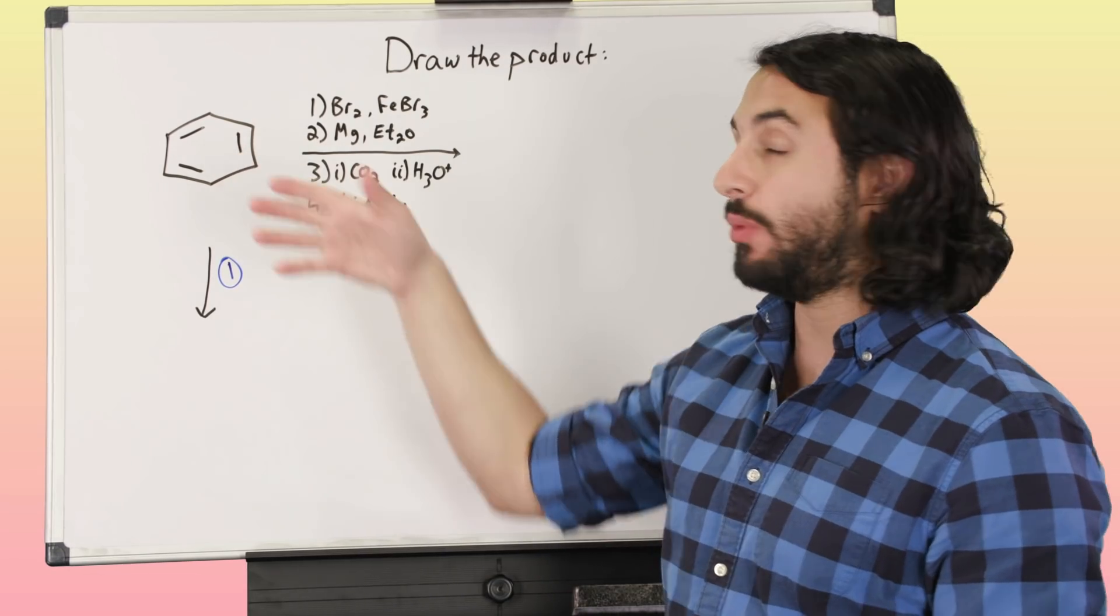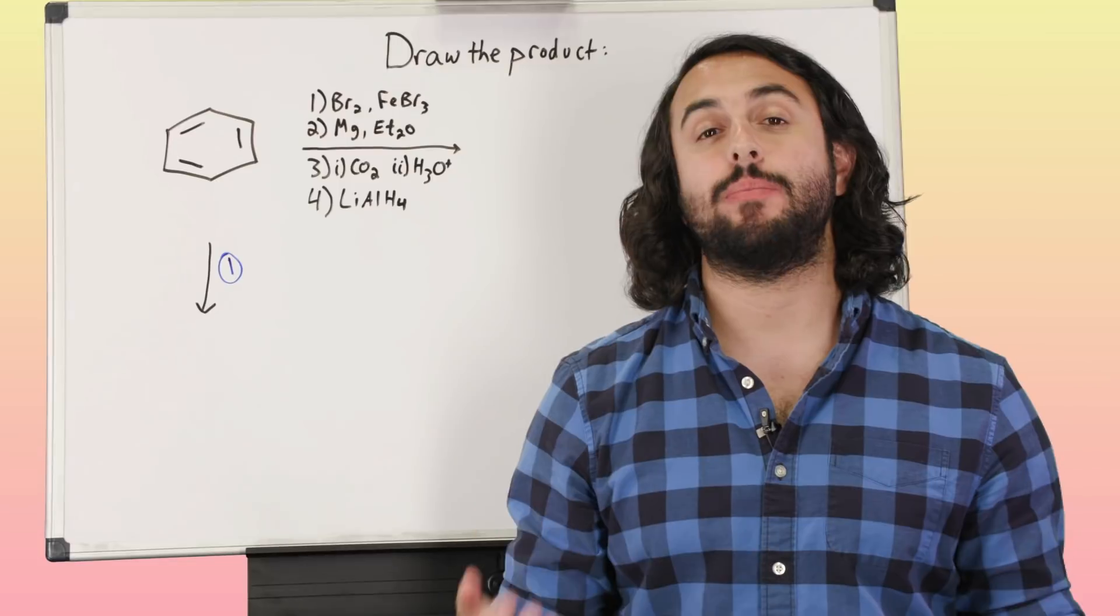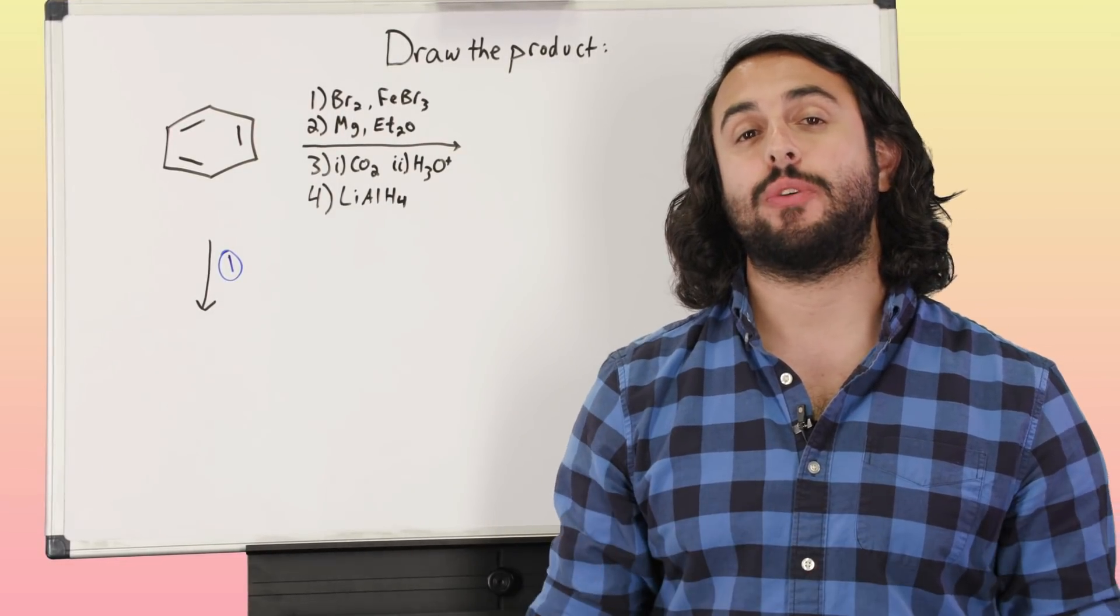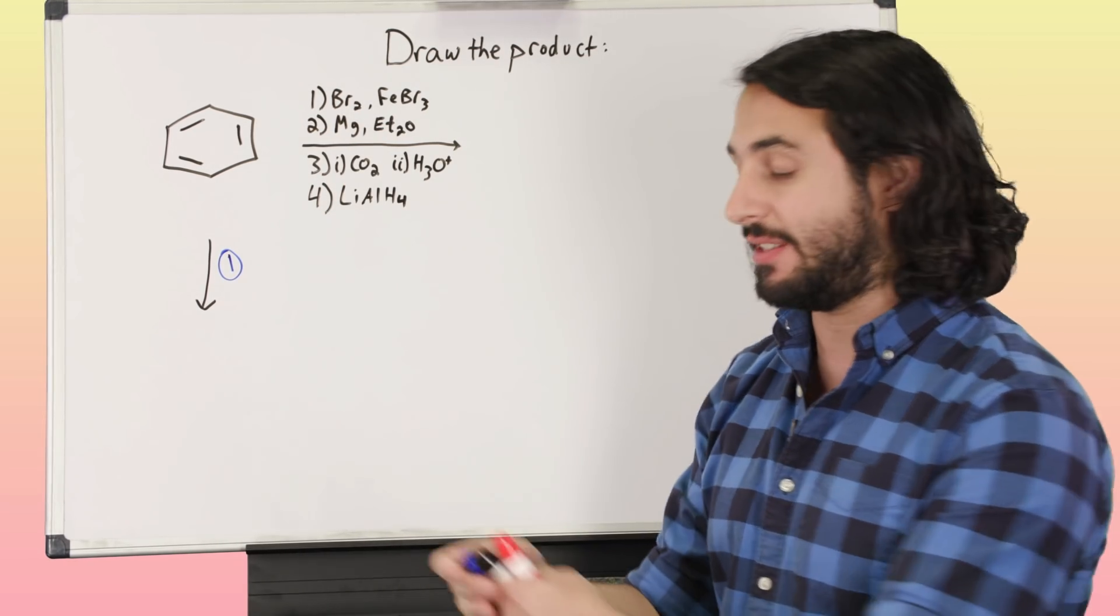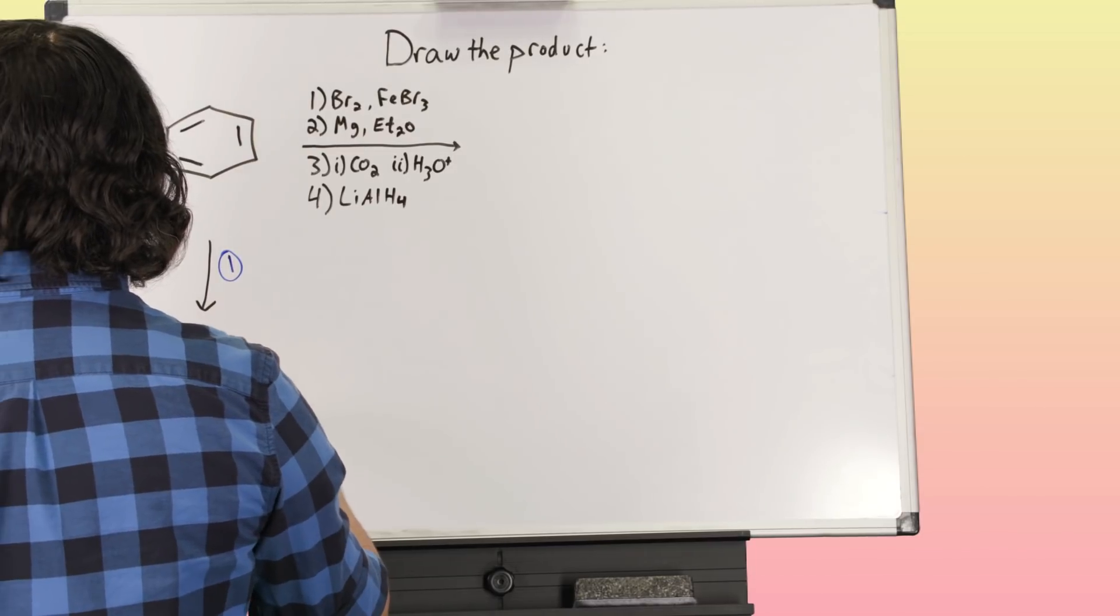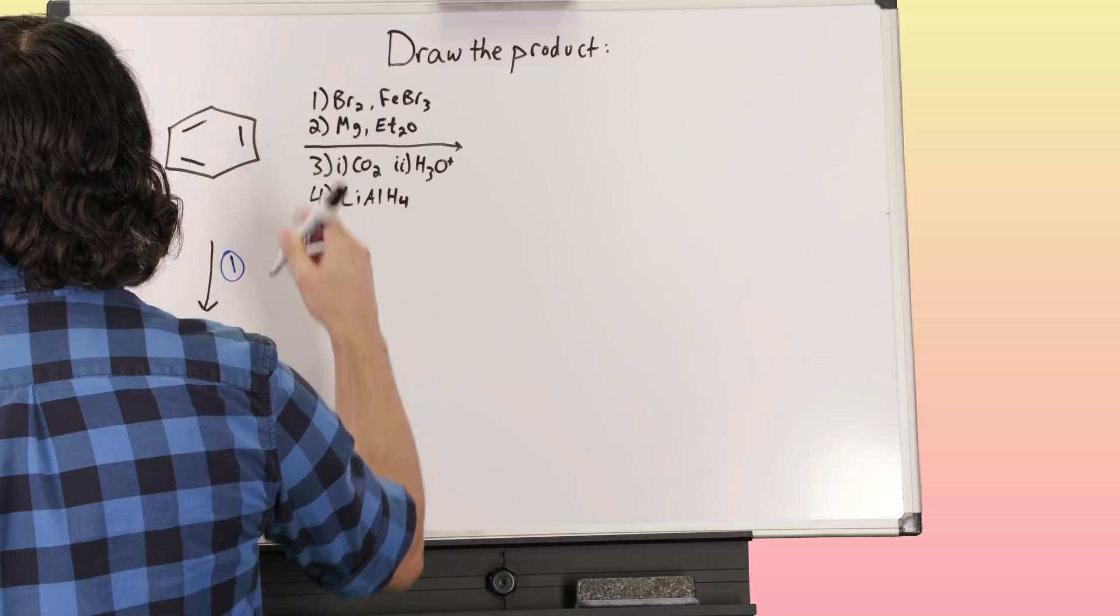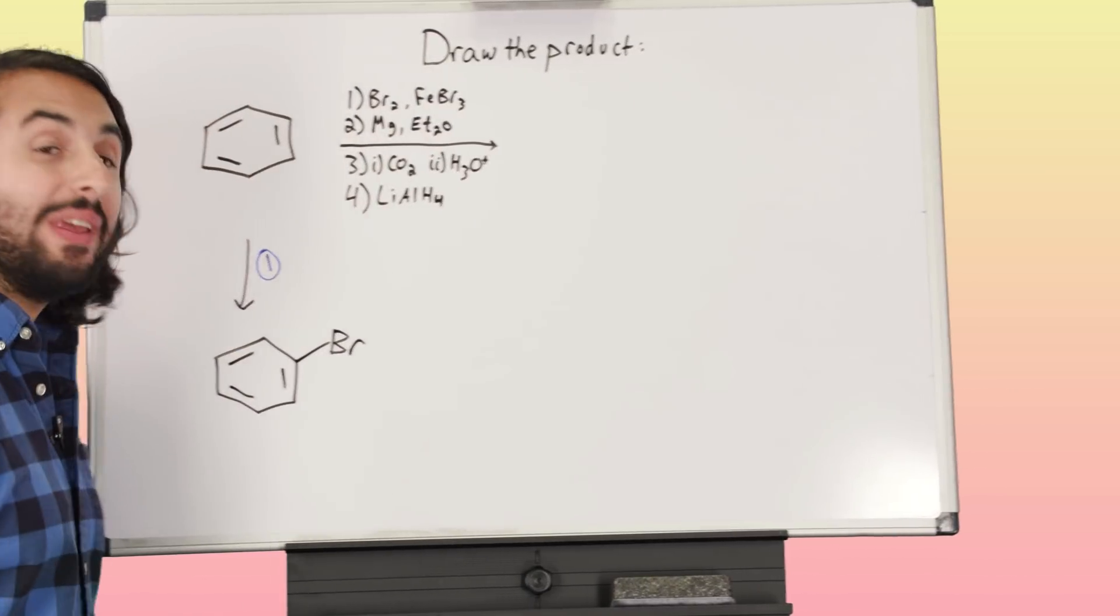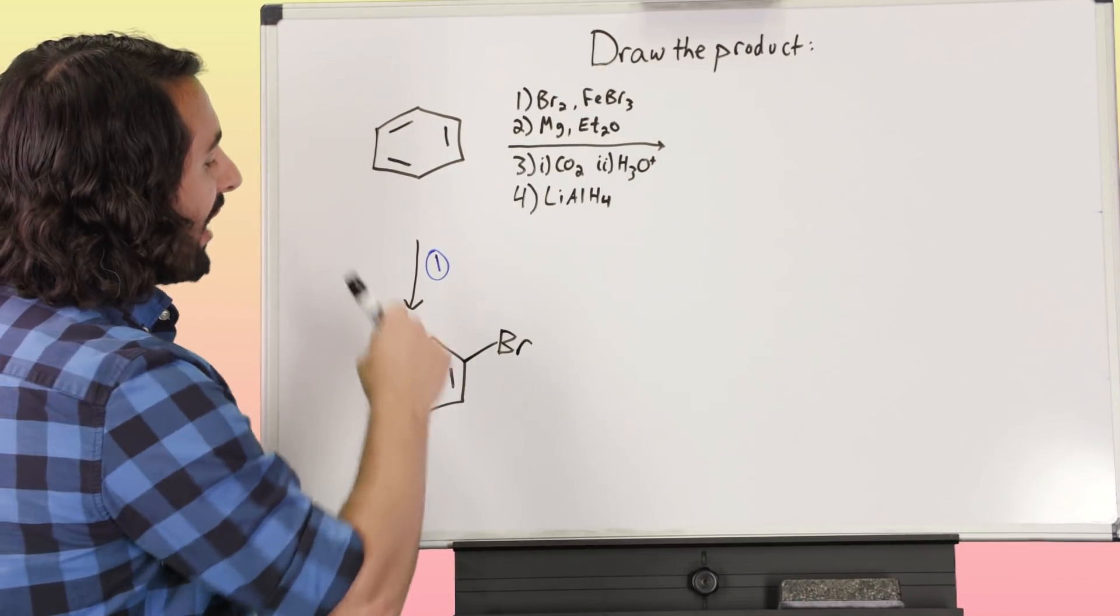So we've got benzene, we've got something aromatic, and FeBr3, this iron tribromide catalyst—that should be a tip-off. We know that we're doing electrophilic aromatic substitution; we're going to brominate this benzene ring. If we recall that reaction, this is electrophilic aromatic substitution with that iron tribromide catalyst. We're going to get a bromine on there, anywhere on the ring. We just throw a bromine on there. That's reaction one.